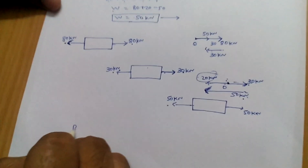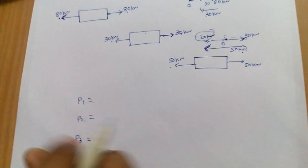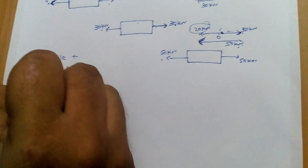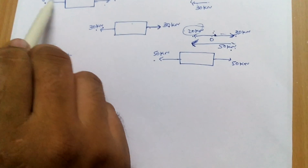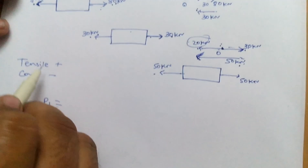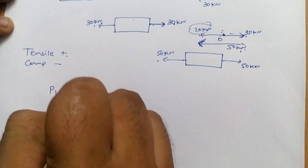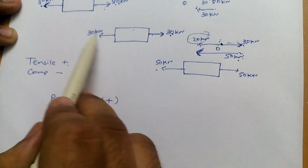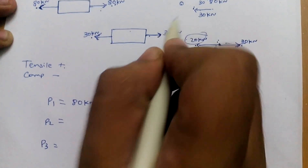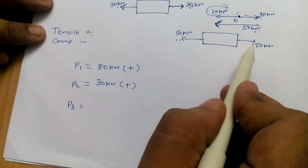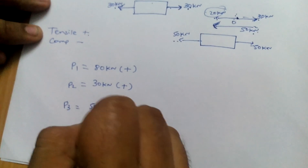From the figure we can write P1, P2, and P3. P1 is 80 kN — the force is tensile, so we assume plus for tensile direction and minus for compressive direction. The arrows are away from the bar, meaning tensile force, so P1 is equal to plus 80 kN. In the second block, the force is 30 kN in the tensile direction, so P2 is equal to 30 kN. Similarly, P3 is 50 kN in the tensile direction, so P3 is equal to plus 50 kN.